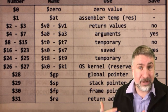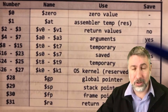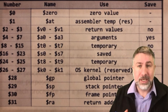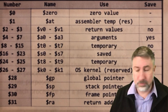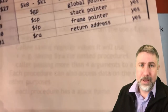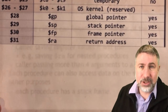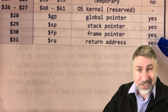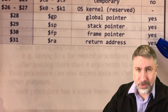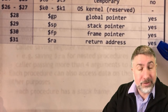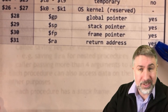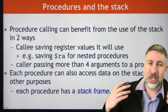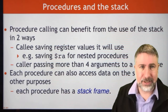This is callee-saved registers — the save column. This means that as the callee, as the subroutine, it's our responsibility to save those registers. The return value and the stack pointer are also callee-saved registers, which means if we're going to call another subroutine, we have to save the return address somewhere. We can save it on the stack so we can use it for saving register values and for passing information.